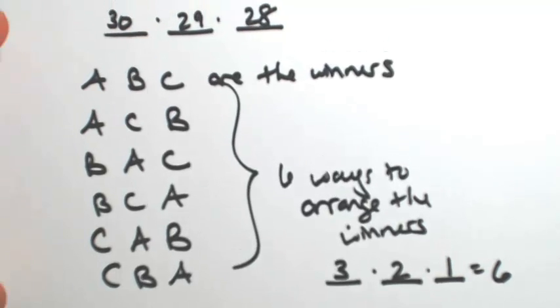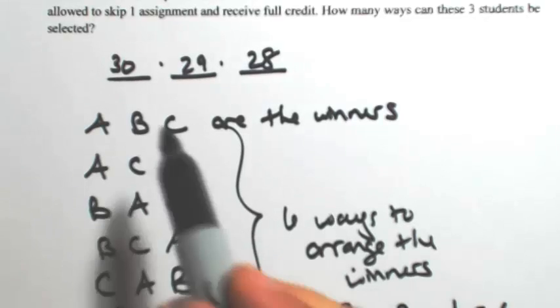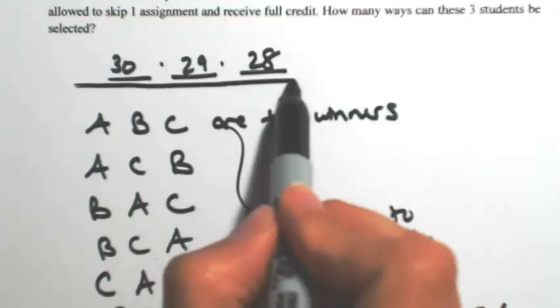Back in the original way that we were solving the problem, we want to get rid of all these repeats. We don't need all of them, so what we're going to do is divide by these repeats.